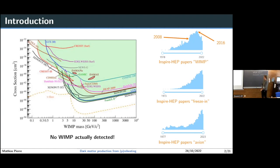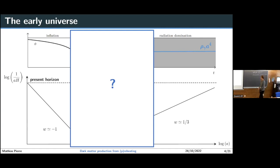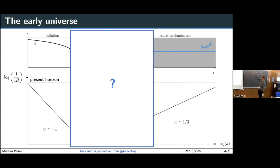We haven't discovered any form of BSM physics, and the question of what dark matter actually is remains unanswered. We don't really know where dark matter could show up in experiments. The question I will try to answer today is: what could source dark matter production in the early universe? To answer this, we need to look at what we have in the early universe. We suspect there was a phase of inflation, needed to explain anisotropies in the CMB, where the universe was dominated by a scalar field with an equation of state parameter close to minus one.